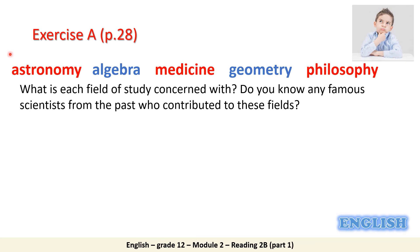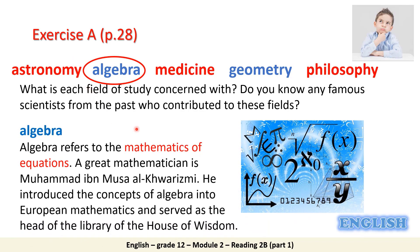Moving on to the second field of study: Algebra. Algebra is the mathematics of equations — mathematical statements in which we have two equal amounts. One of the most famous mathematicians is Muhammad ibn Musa al-Khwarizmi, who introduced the basics of Algebra.